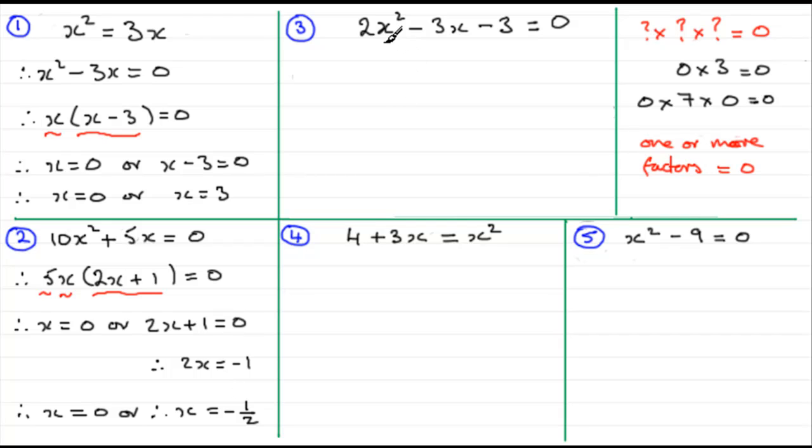Now, what about number 3? I picked number 3 just purely because I find that a lot of students have a lot of problems when they've got a number in front of the x² here. And you've got three terms, a trinomial. How do we factorise these? Well, as I say, if you're having problems with this, just go on my site and look under factorising quadratics or trinomials.